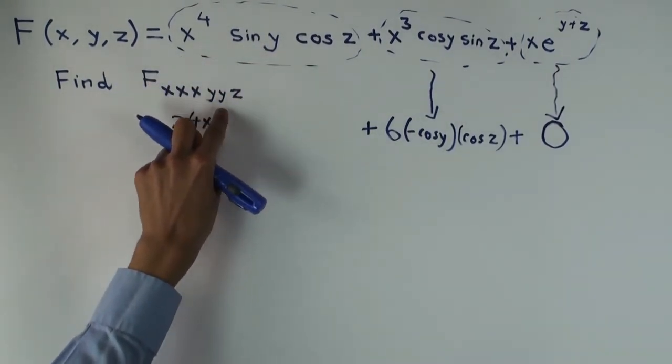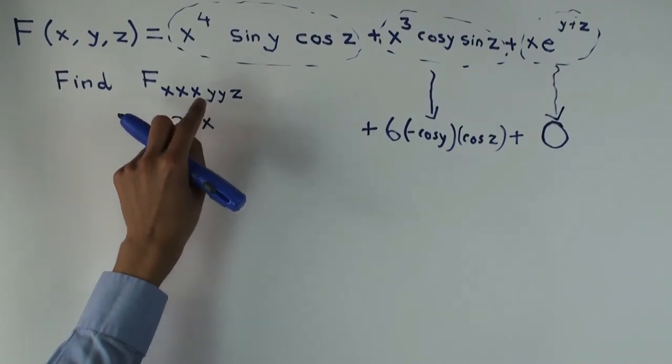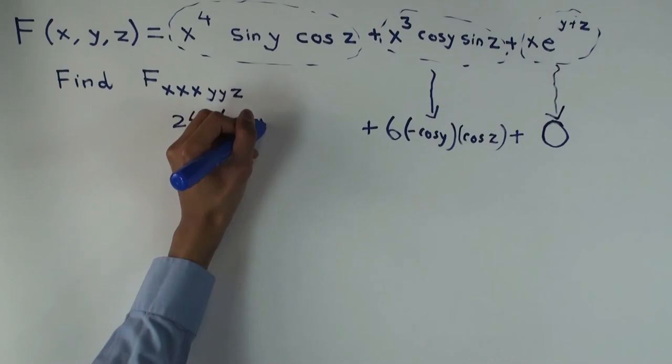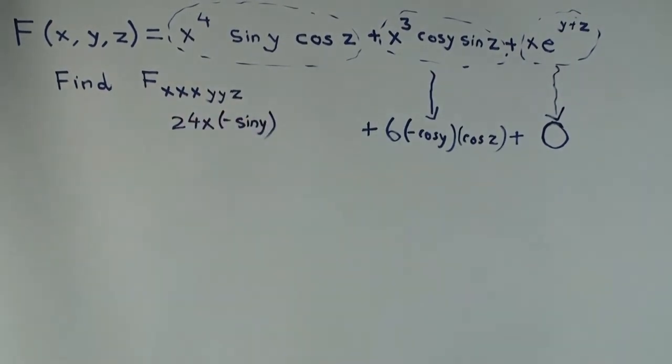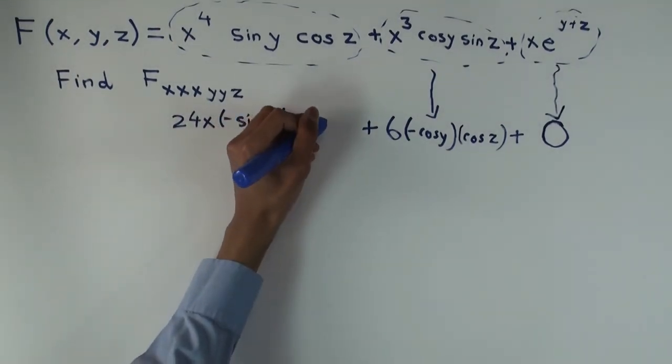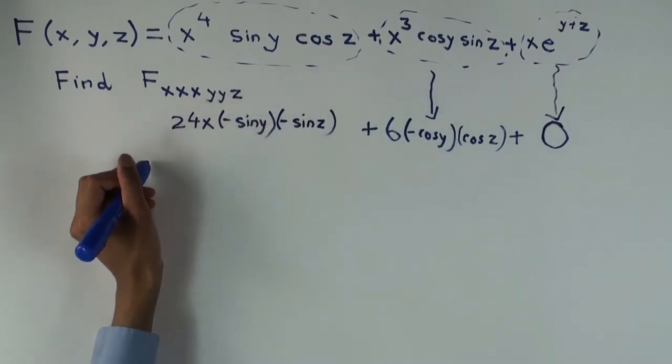Now sine y, you need to differentiate how many times? Twice. Twice. So you'll get negative sine y. Negative sine y. Cosine z, you need to differentiate it how many times? Once. So what do you get? Negative sine z. Negative sine z.